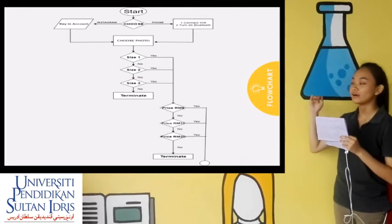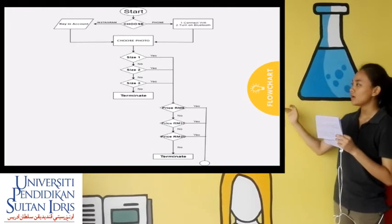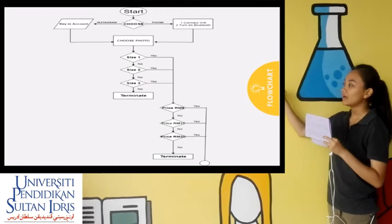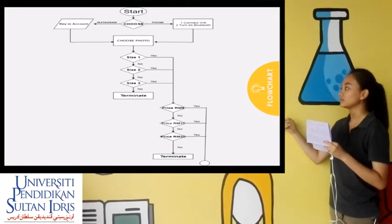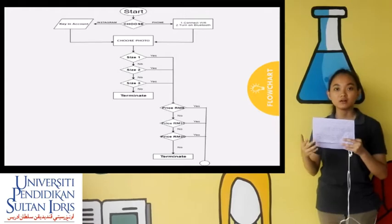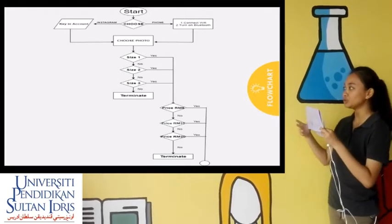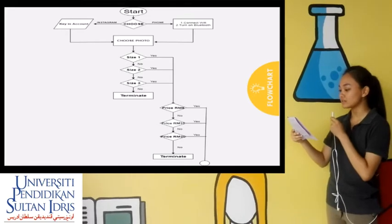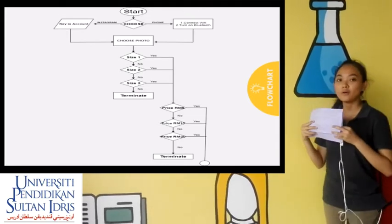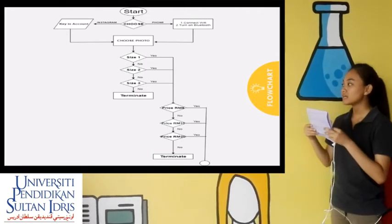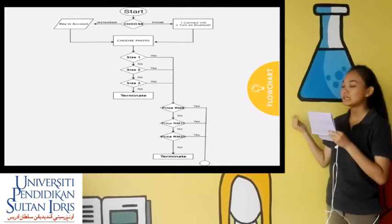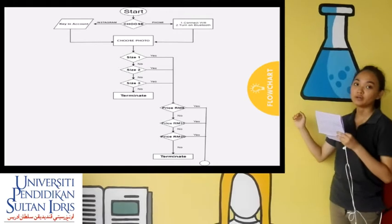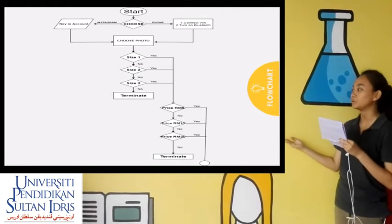After that, the flow chart directs to the choose photo process. Once again, the system requires the user to choose the photo size. From the flow chart, size 1 represents Polaroid frame, size 2 represents Caption frame, and size 3 represents Postcard frame.